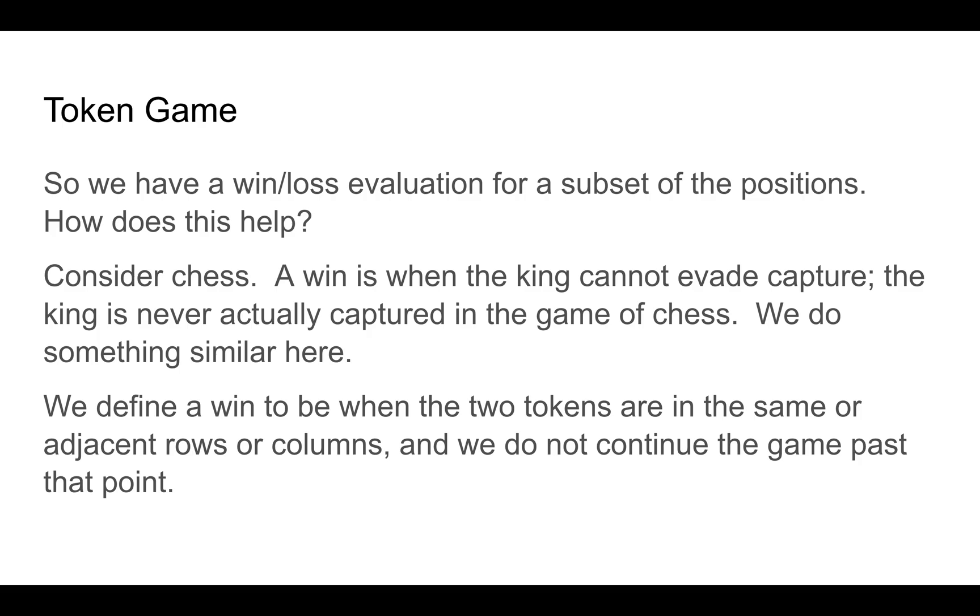So how does this help? Well, let's compare this to chess. In chess, you win when the opponent's king cannot evade capture, when there's nothing he can do to get out of check. But we never actually capture the king. We just don't. So can we do something similar here? Instead of defining a win to be when the other player cannot move, we can define a win to be when two tokens are in the same or adjacent rows or columns, but not adjacent. And we do not continue the game past this point. So in other words, we have a set of legal states of the game now that require that the two tokens not be adjacent. And we have a win situation where they are within one in either row or either column.